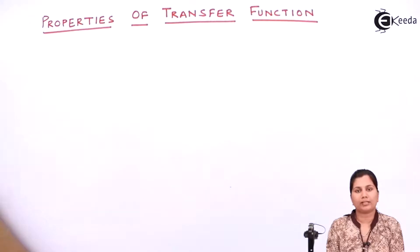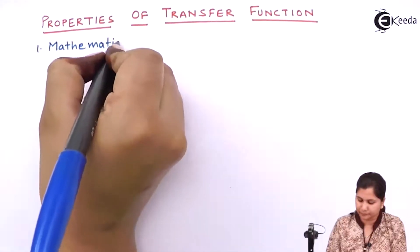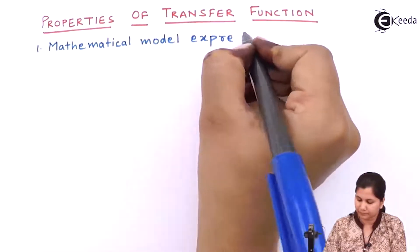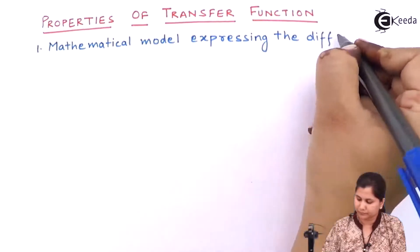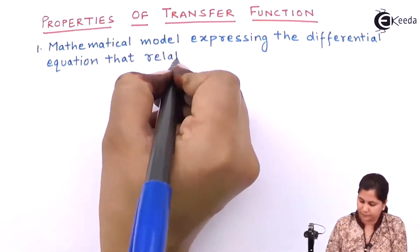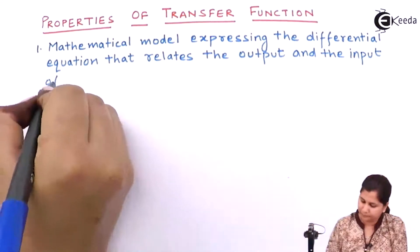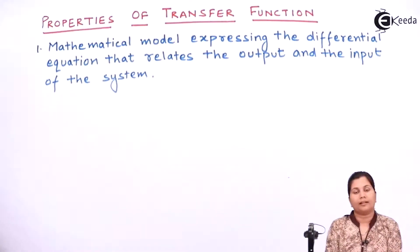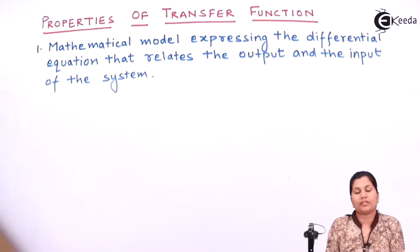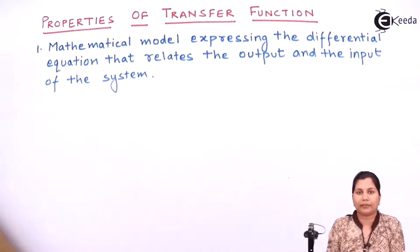So the first property of transfer function is that the transfer function is the mathematical model which expresses the relationship between the input and the output of the system, and this relationship is described by a linear time invariant differential equation.